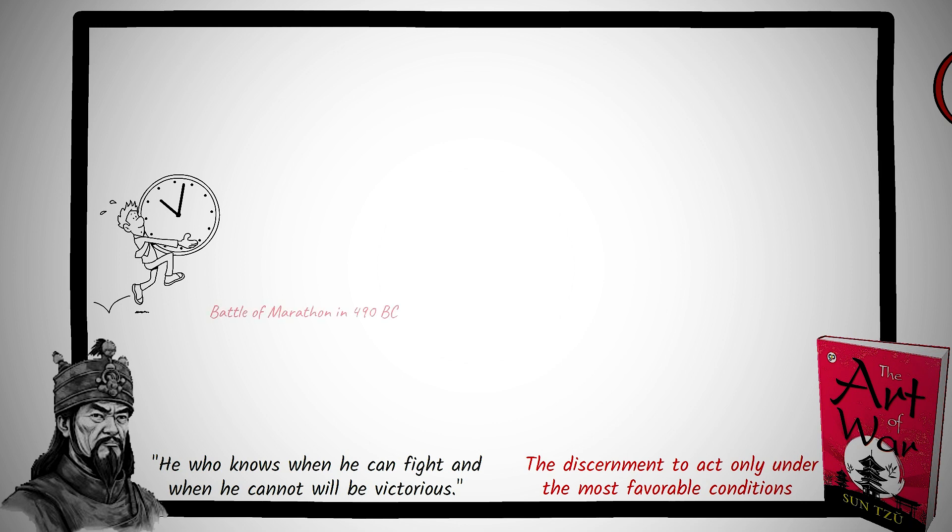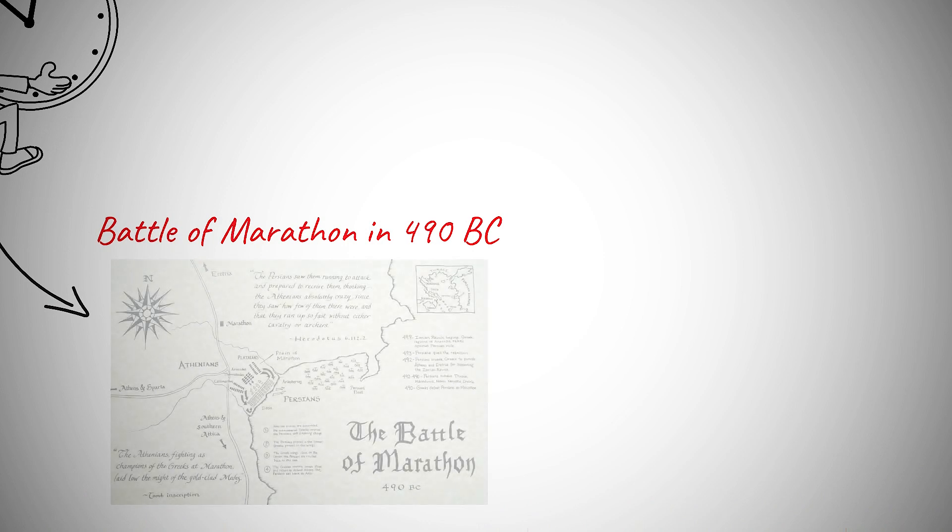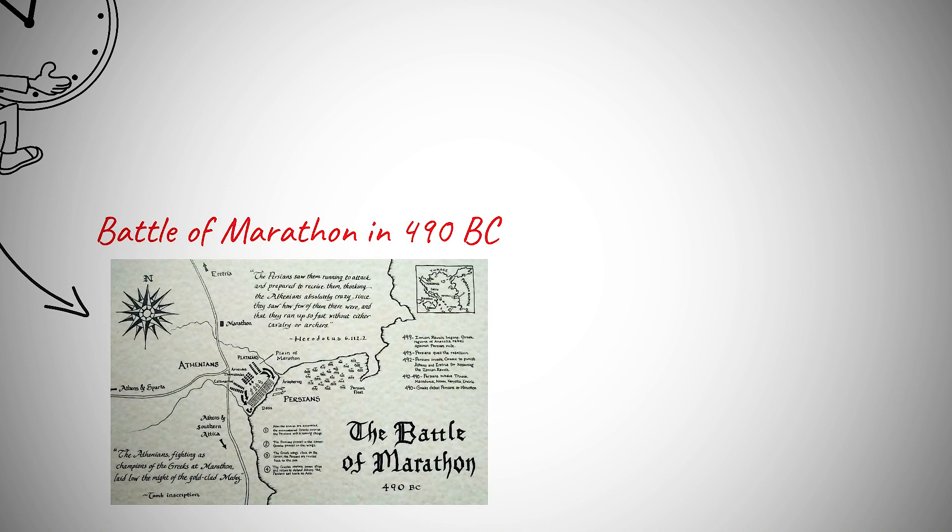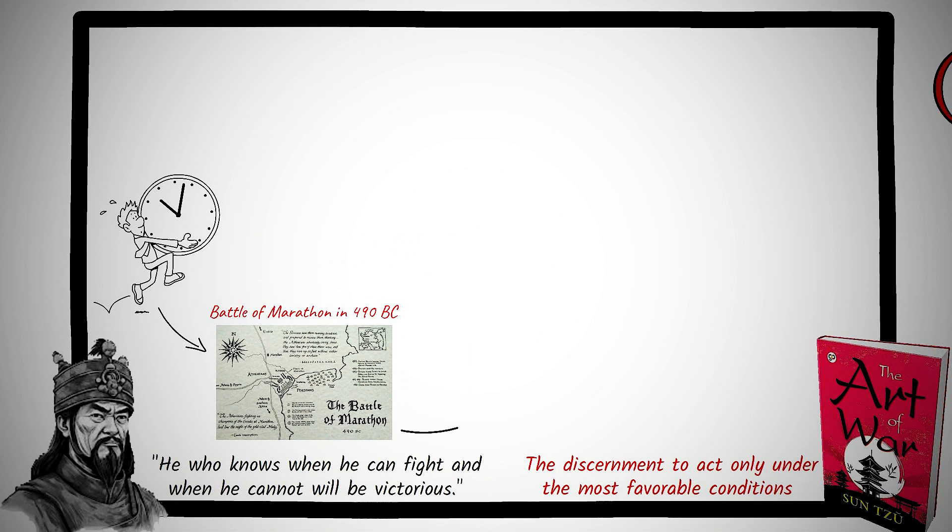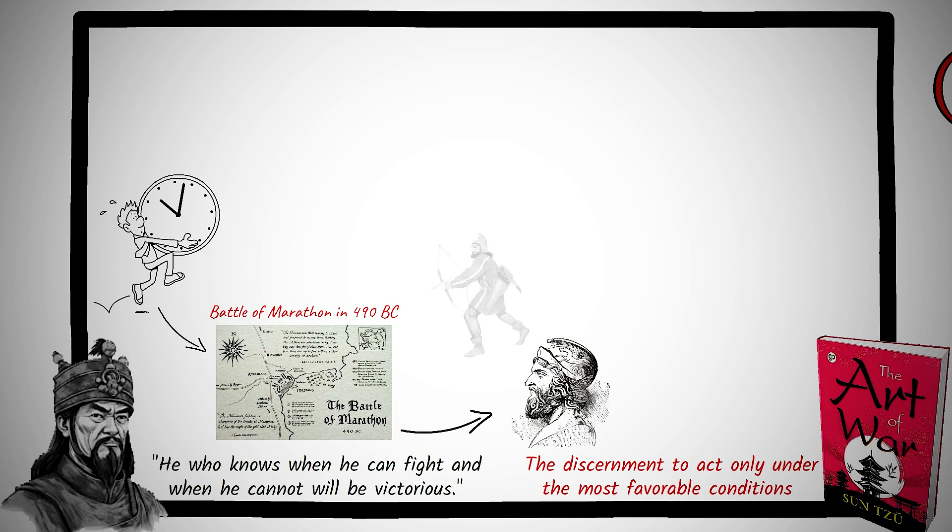Consider the Battle of Marathon in 490 BC during the Greco-Persian Wars. The Persian Empire, vast and powerful, sought to expand its territories by invading the smaller city-states of Greece. Landing at Marathon with a formidable force, they expected a swift victory. However, the Athenian general Miltiades, understanding the strength of the Persian archers and the disadvantages hoplites would face in a direct assault, chose not to engage immediately. Instead, he waited.